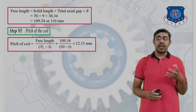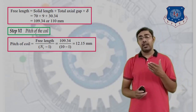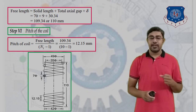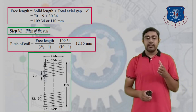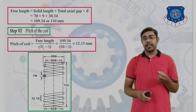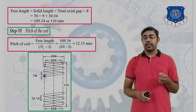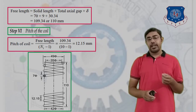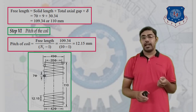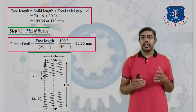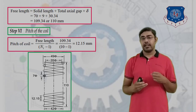Finally, we draw the spring diagram with the calculated dimensions. The wire diameter is 7 mm, free length is 110 mm, pitch is 12.15 mm, mean diameter is 42 mm, inner diameter is 35 mm, and outer diameter is 49 mm. In this lecture we learned the design of a helical spring subjected to an external static force. Thank you.